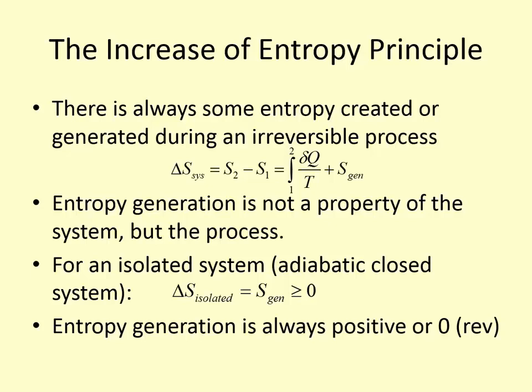For an isolated system — adiabatic and closed, with no heat or mass transfer — entropy generation is all we have to consider, and it's always positive unless the process is reversible. If there's no heat transfer and no mass transfer, there's not much happening in our system, but entropy generation can still occur. We consider ΔS only when there is heat or mass transfer.